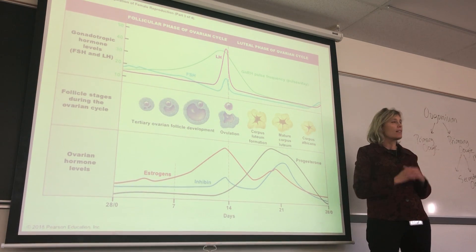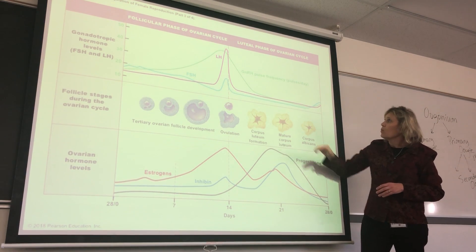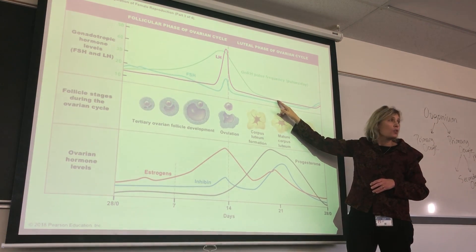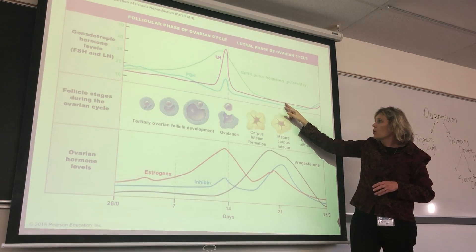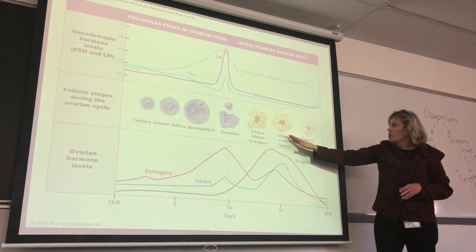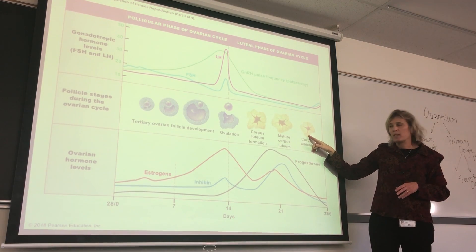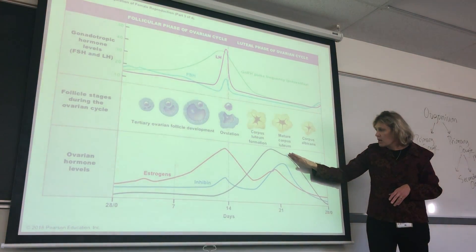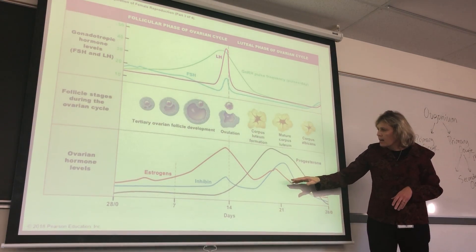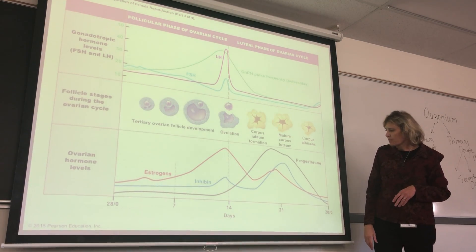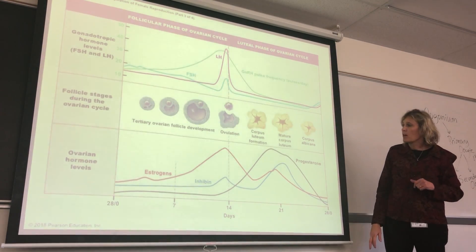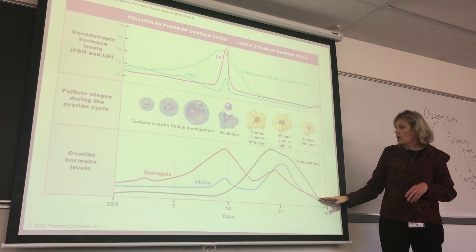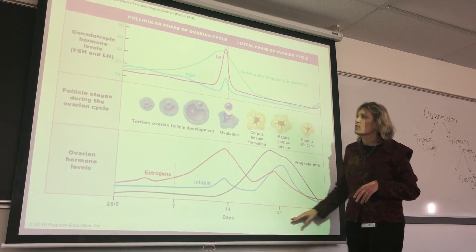Progesterone is going to keep the uterine lining thick. Gonadotropic releasing hormone pulse is really low, so FSH isn't being released and luteinizing hormone isn't being released. The corpus luteum then degenerates into the corpus albicans. At that point, it no longer produces estrogens or progesterone. Progesterone levels fall and estrogen levels fall. Now estrogen is at a low level and we start over again.